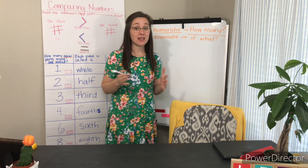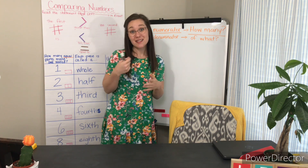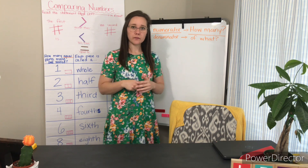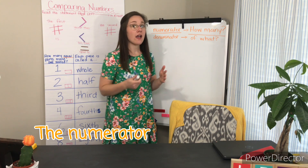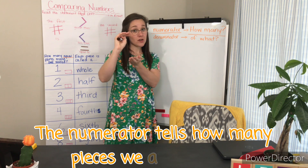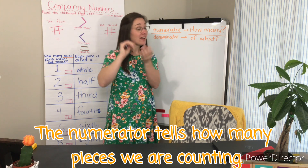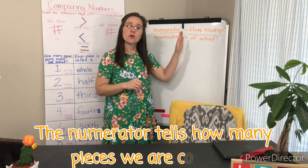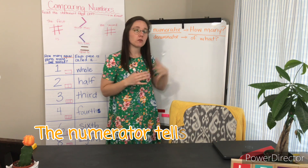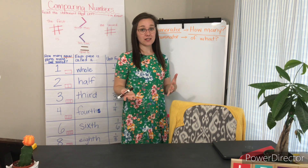So today, all the fractions that we're comparing are going to have the same denominator, which means the thing that's going to be different is the numerator. The numerator is the part of the fraction that tells us how many pieces we're counting — maybe the shaded pieces of a model, how many hops on a number line, or how many equal pieces of pizza we ate. Whatever it is that we're counting, that number goes in your numerator. So our numerators are what's going to be different today.